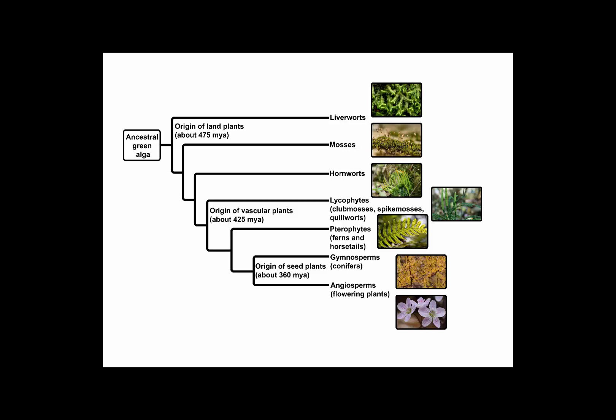Let's learn about bryophytes. Bryophytes are plants. Here we have a diagram of the plant kingdom showing the major groups — the phyla of plants. Some plants diverged fairly early from the rest, and these are what we're going to talk about tonight. They are sometimes called bryophytes, which is a loose term for three different phyla: liverworts, mosses, and hornworts. Mosses are sometimes referred to as bryophytes in a narrow sense.